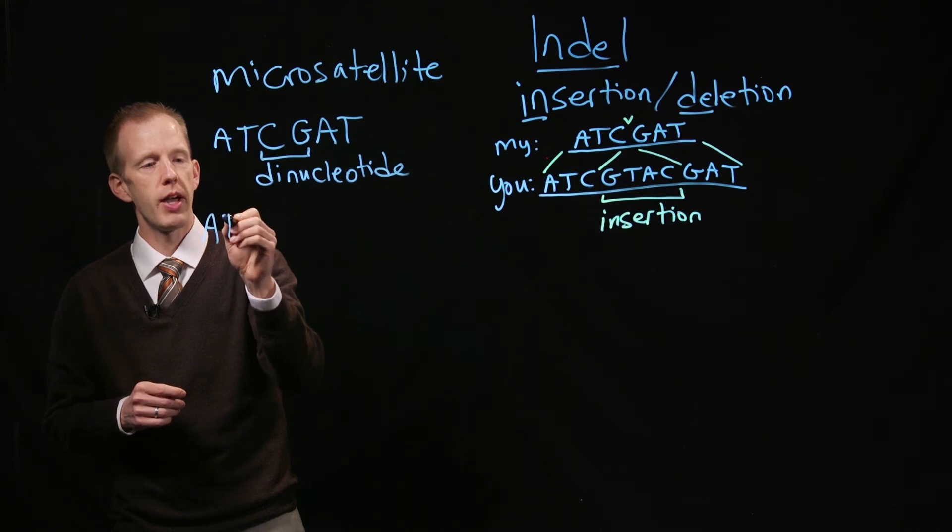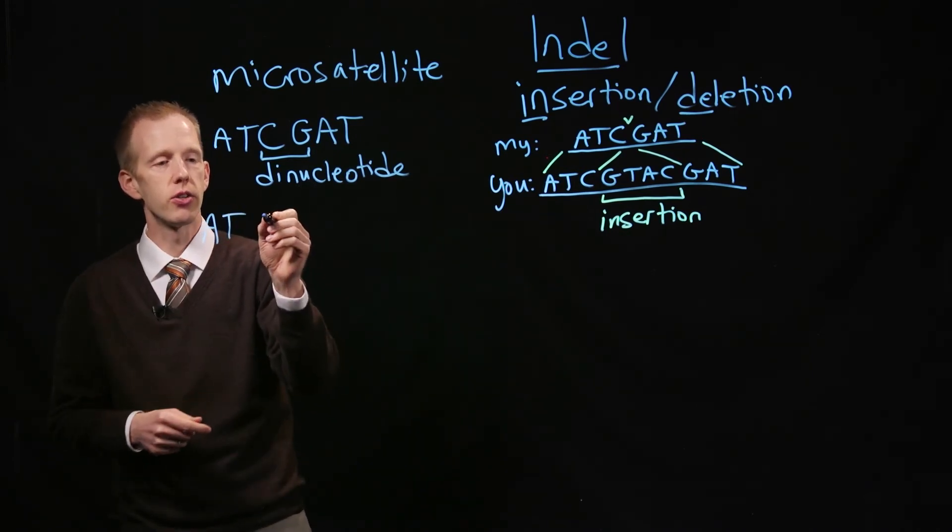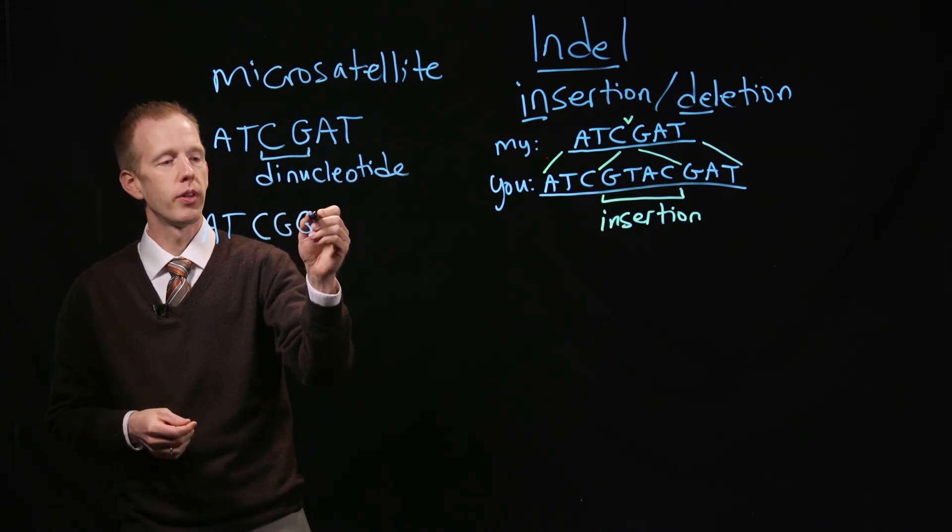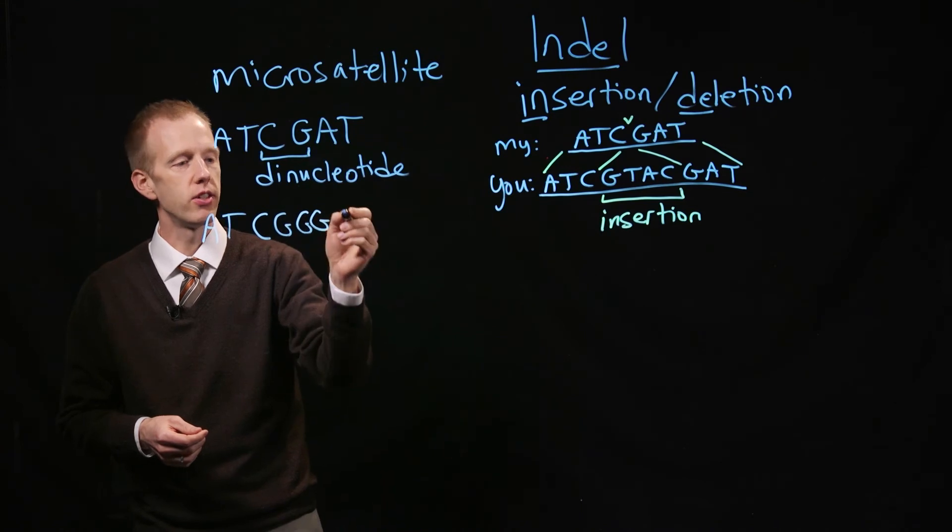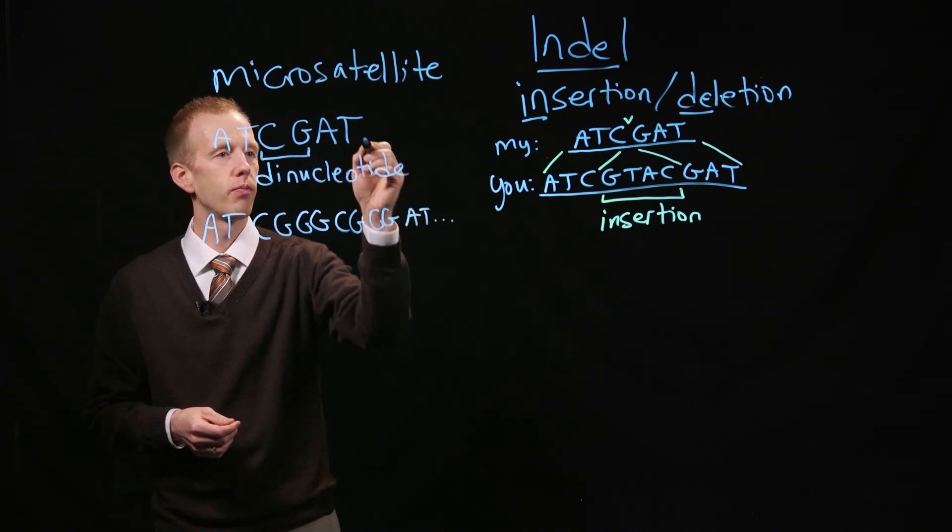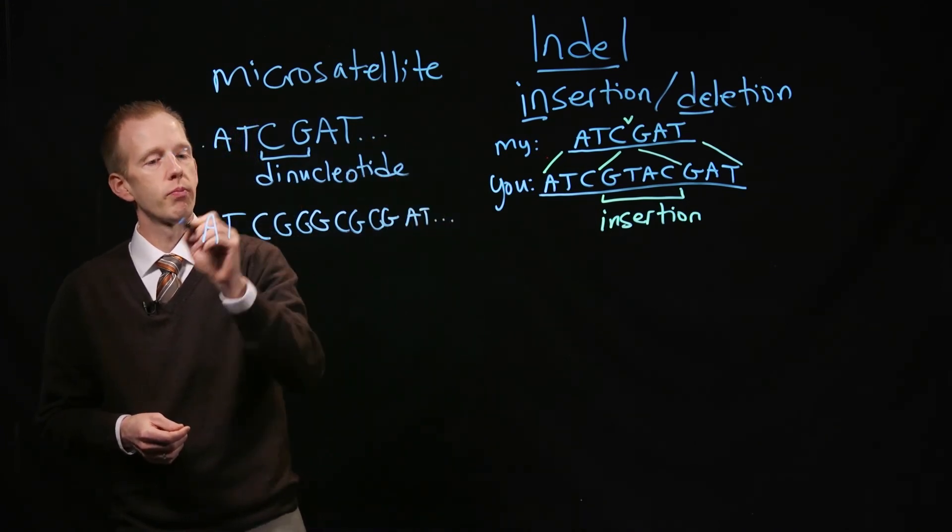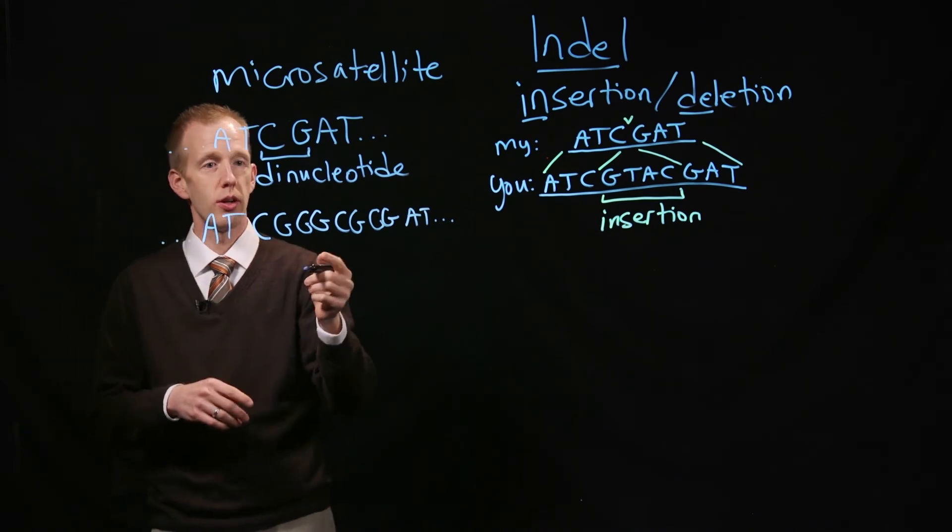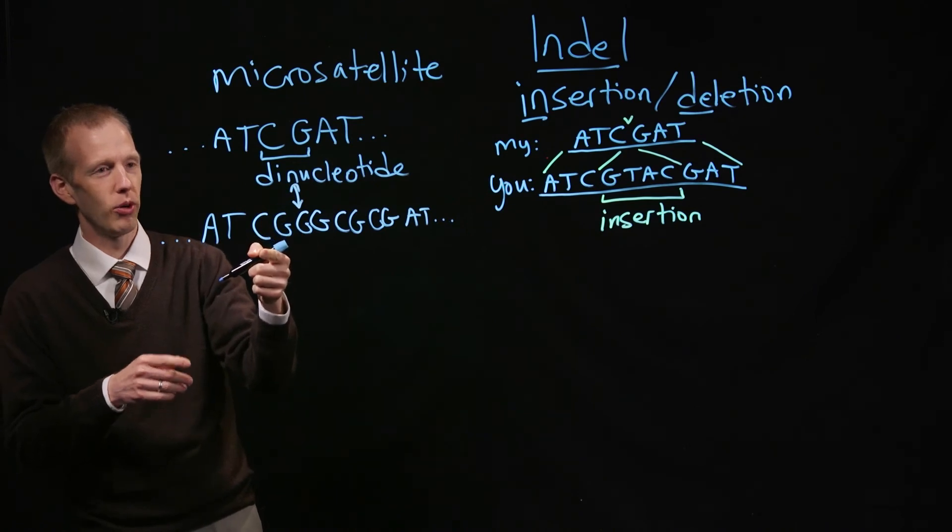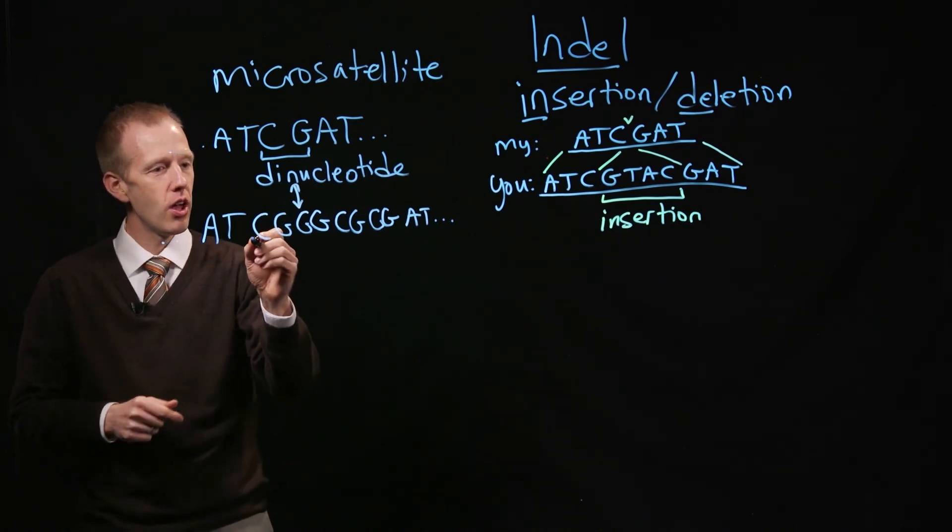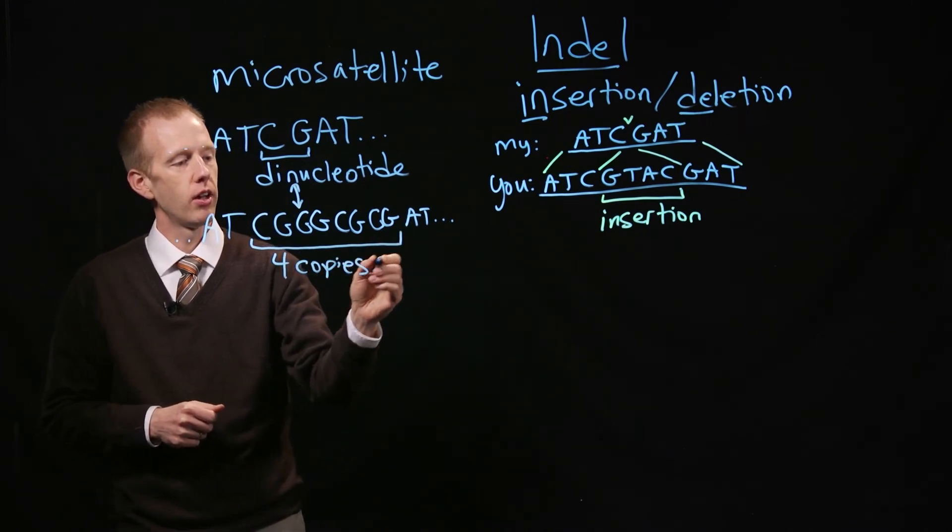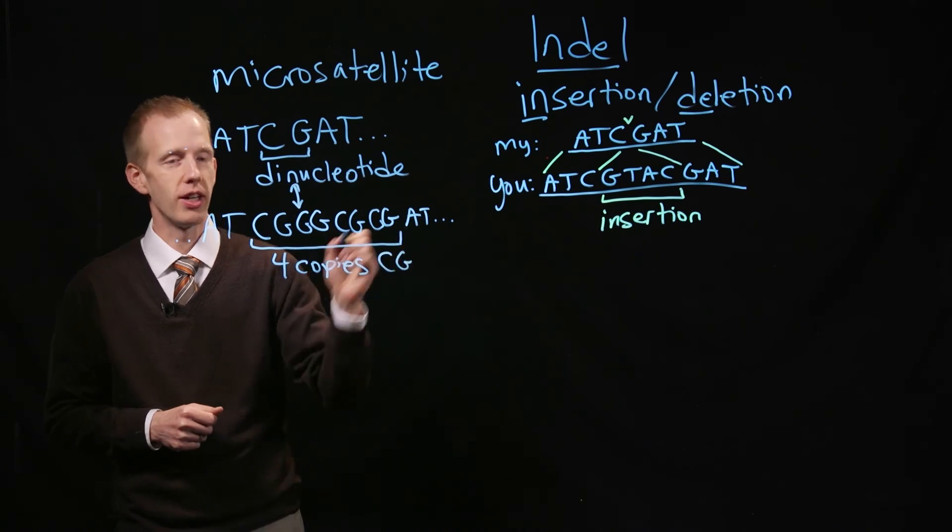Other individuals might have the same flanking sequence, the AT that's on either side, but those different individuals, or different copies of the same chromosome, might have CG, CG, CG, CG, CG, and then the rest of the chromosome sequence. So this is an insertion or a deletion, depending on which direction you're looking. It's an insertion if you're comparing this chromosome to that one, or a deletion if you compare this chromosome to that one. But now we have four copies of the unit, the dinucleotide, CG.